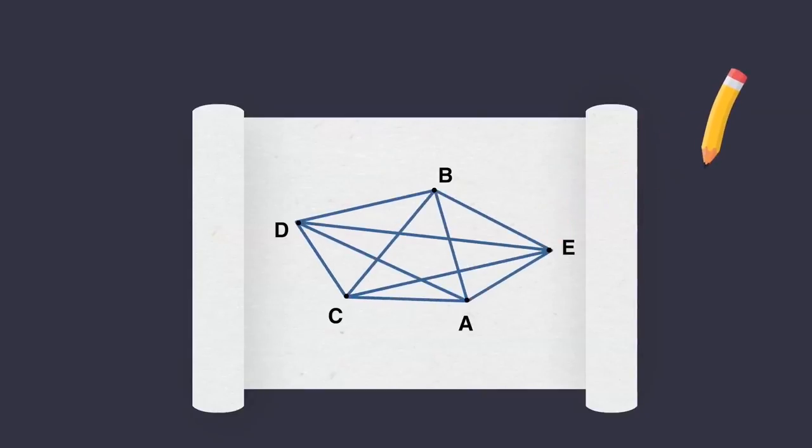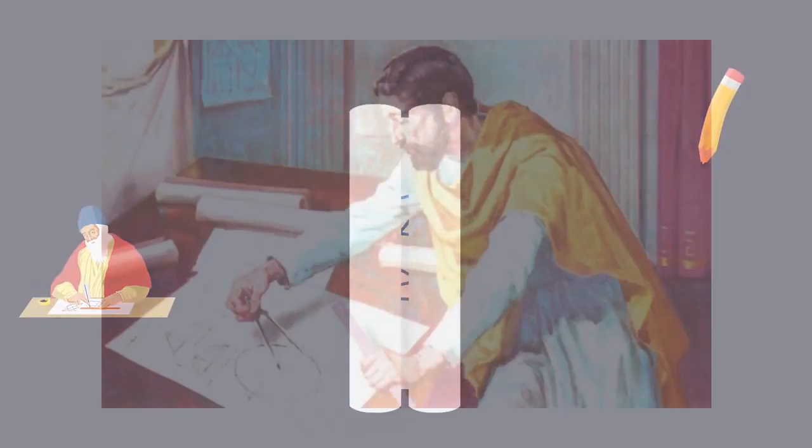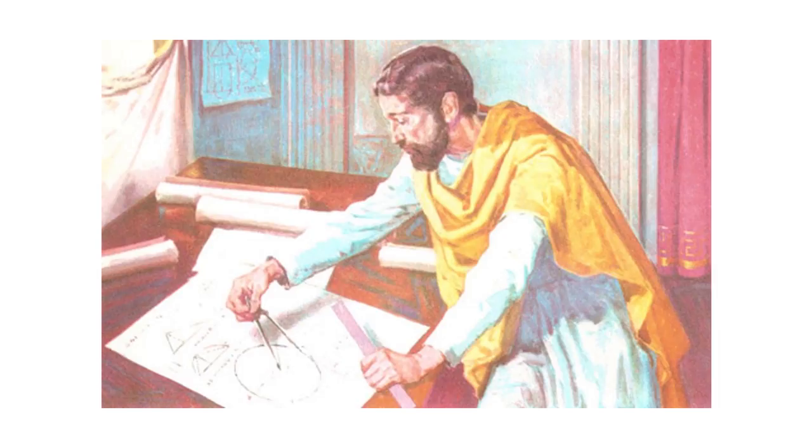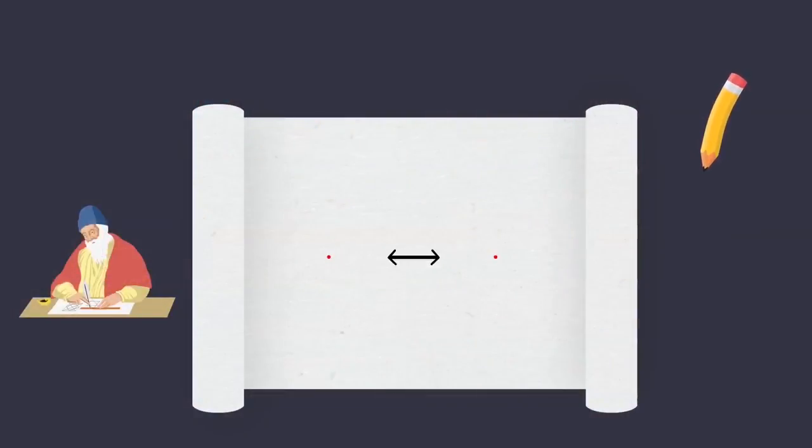5. A surface is that which has length and breadth only, meaning it has only length and width. 6. The edges of a surface are lines. 7. A plane surface is a surface which lies evenly with the straight lines on itself.